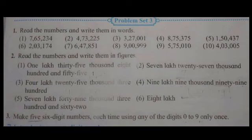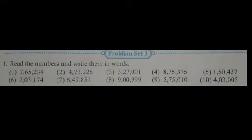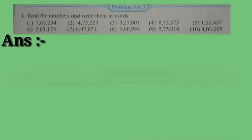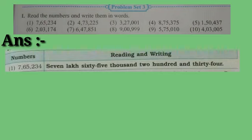Let's start it. Here is our problem set number 3. The first question is: read the numbers and write them in words. Numbers in figures are given — about 10 numbers — which we have to write in words. You have to prepare a chart with 2 to 3 columns: serial number, number in figures, and number in words. The first number is 7,65,234, and its notation is seven lakh sixty-five thousand two hundred and thirty-four.